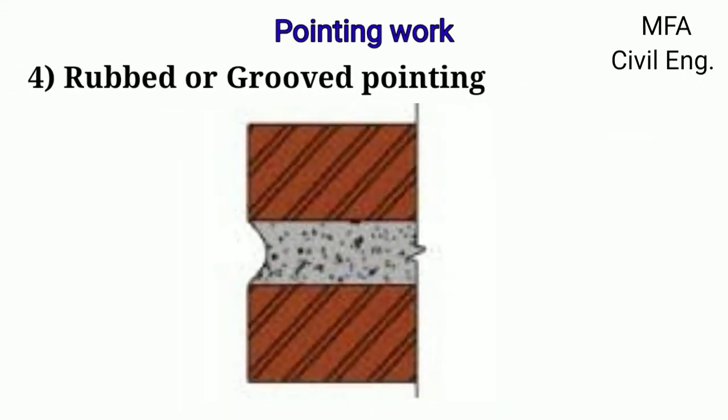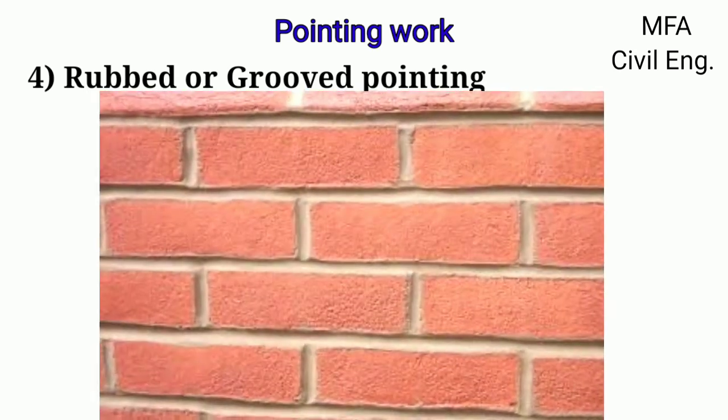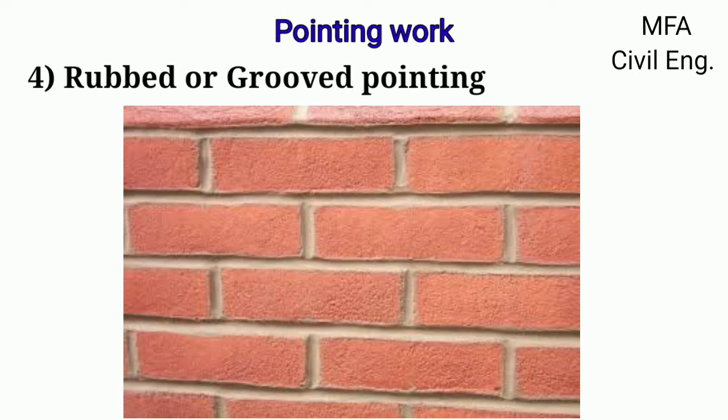In rubbed or grooved type of pointing, the raked joints are filled up flush with the face of the wall and semi-circular notches are formed by a special tool. This type of pointing is commonly used. It improves the appearance of the wall.